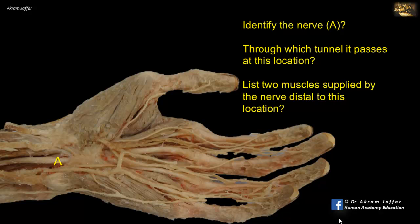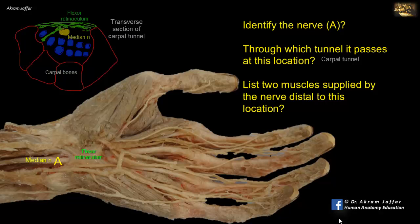The nerve is the median nerve, shown here proximal to the flexor retinaculum under which it disappears. It passes into the carpal tunnel, which is bridged by the flexor retinaculum. As the nerve emerges from the tunnel, it provides a recurrent branch.